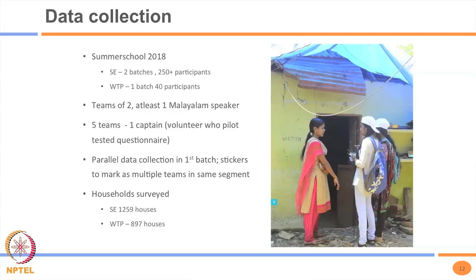Data was collected in two batches: for willingness to pay, 40 participants from the first batch collected data; for the socio-economic survey, about 300 students from both batches collected data. Teams of two always had at least one Malayalam speaker. Every five teams had a captain from among volunteers who did the pilot testing. To avoid double-surveying, stickers were placed on the gate of each surveyed household. In total, more than 2,100 households were surveyed.